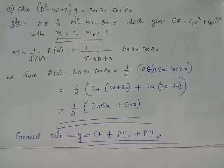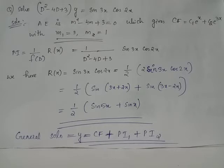Solve the differential equation (D² - 4D + 3)y = sin3x·cos2x. Replacing D with m and equating to zero, we get the auxiliary equation m² - 4m + 3 = 0, whose roots are m1 = 3 and m2 = 1.